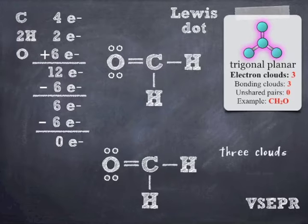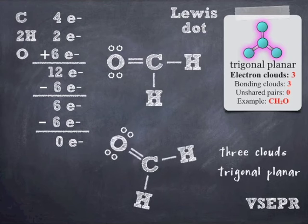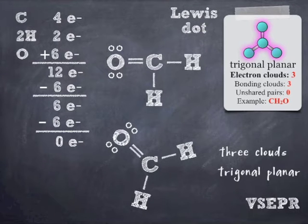So, if I have 3 clouds, that's going to give me a trigonal planar geometry. I can see all the atoms, and so it's going to be very simple to make that 3D. All I have to do is just make the bond angle 120 degrees. Super easy. Okay?